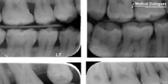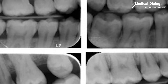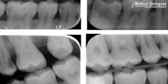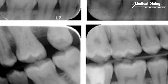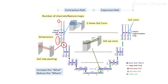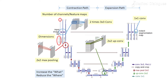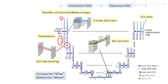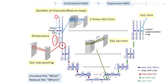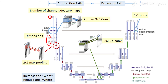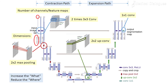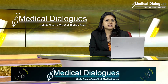The study used 434 bite-wing radiographs from patients who had a previous history of periodontitis. The image processing was performed with a U-net architecture, which is a conventional neural network used to quickly and precisely segment these images.